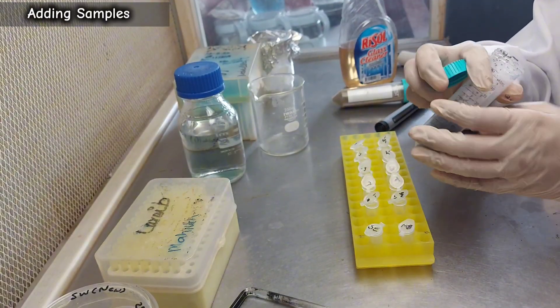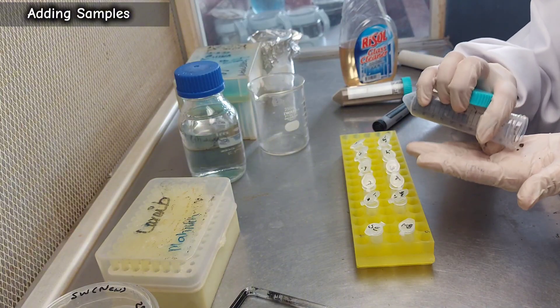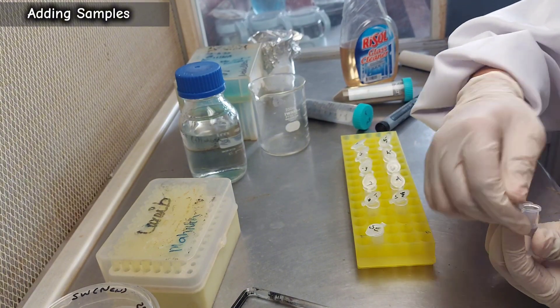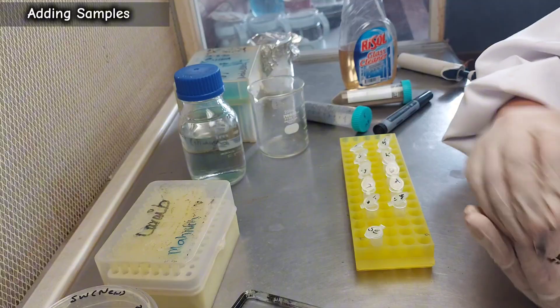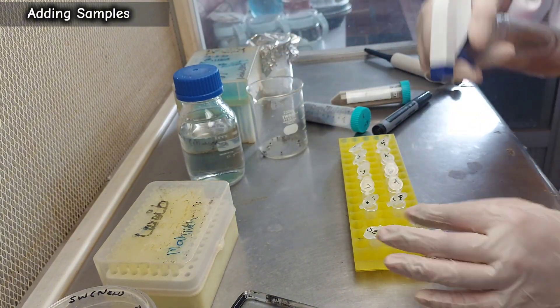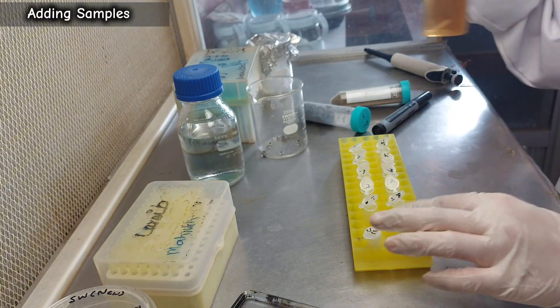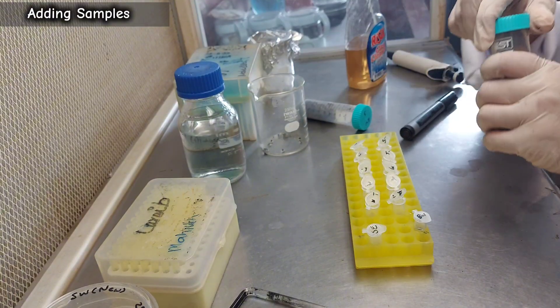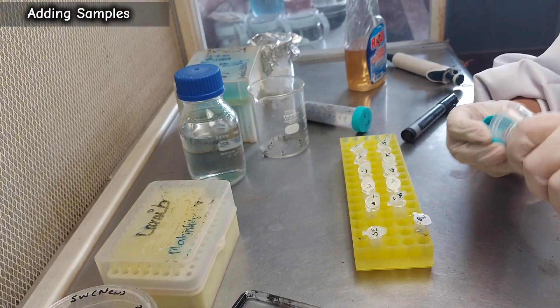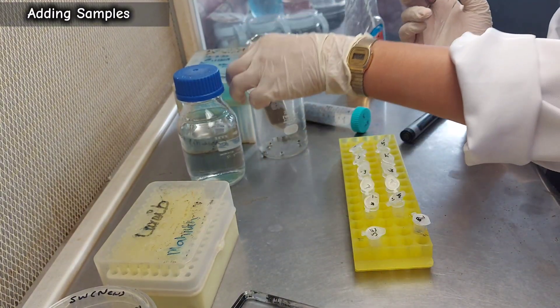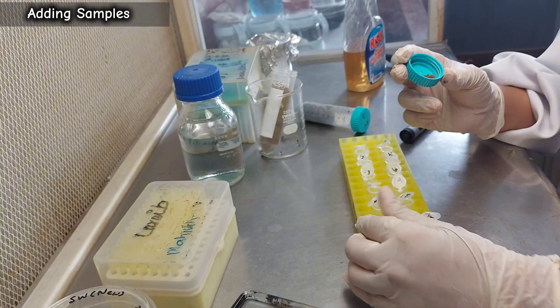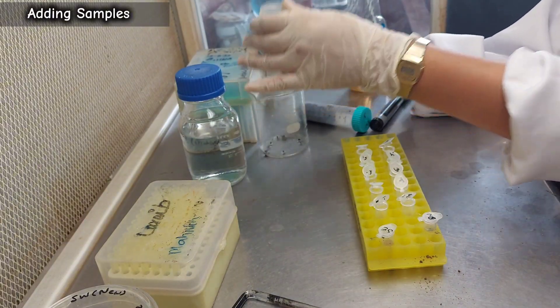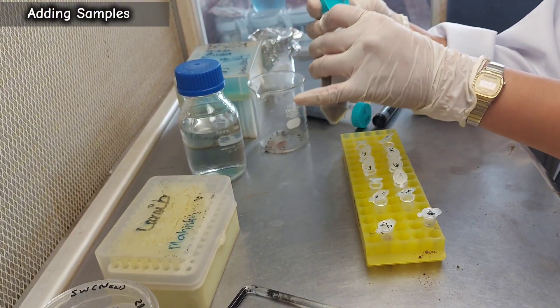If you're using a soil sample, take a small amount and add it into the stock tube. If you're using a water sample, add 100 microliters from the sterile falcon tube into the stock tube. Ensure your gloves and work area remain sterile throughout this process.